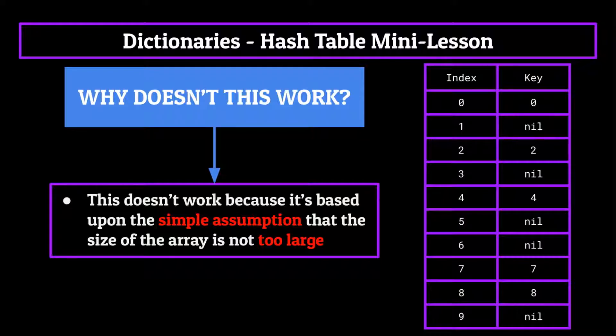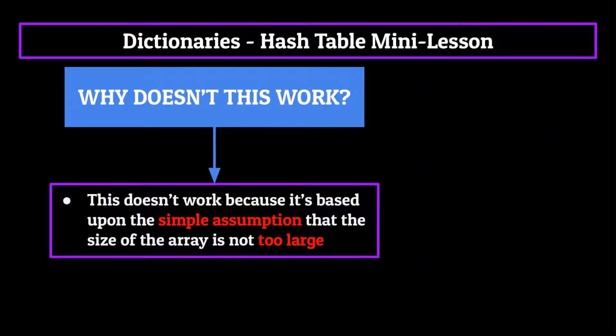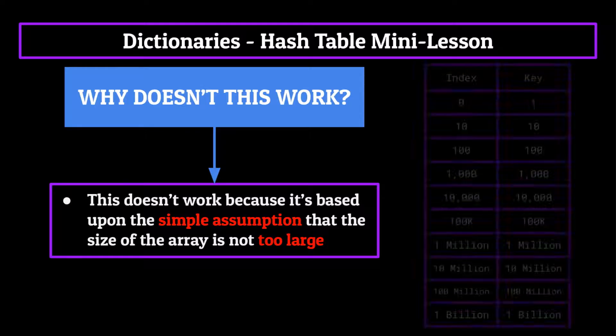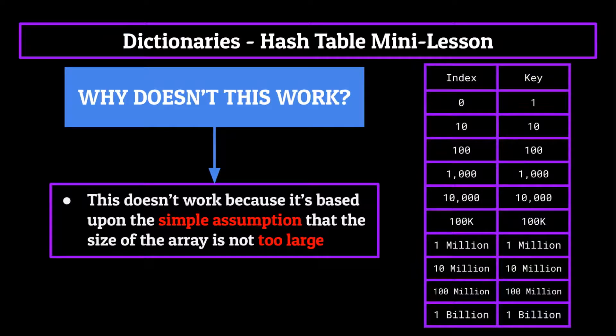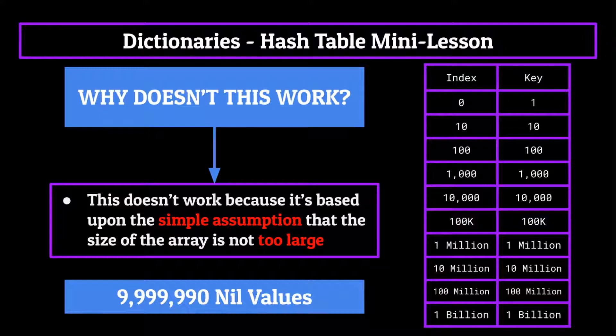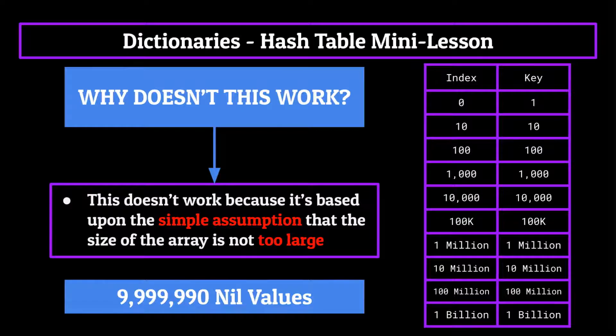Sure, this might work great for a dictionary where we have 10 or so elements. But let's say instead of 10 elements, we have a dictionary we want to use, which has 10 values which are sporadically placed from one to a billion. We want to keep the keys as being in the same index position as their values so that we know exactly where they are and can run operations in constant time. But by my count, that is 999,999,990 nil values just taking up space in memory. And that is not good whatsoever.